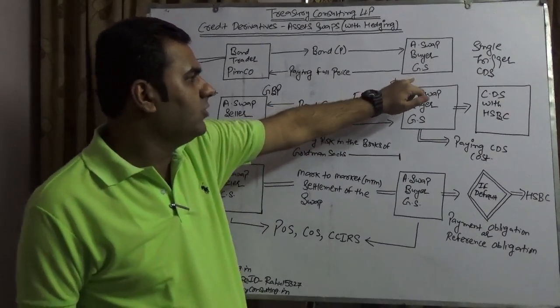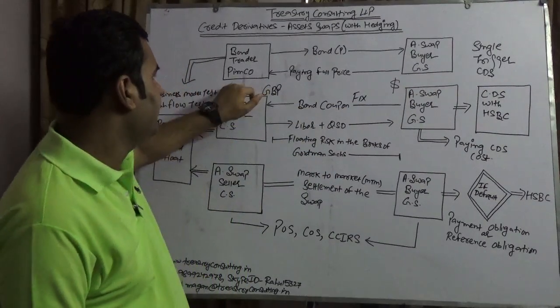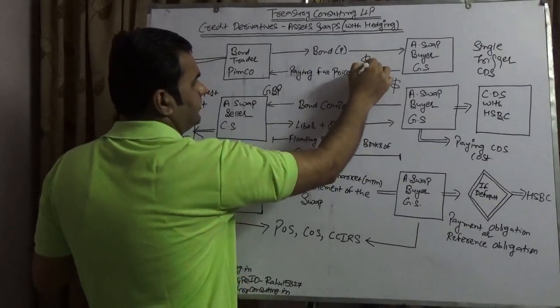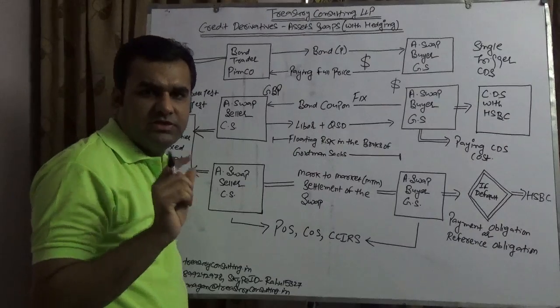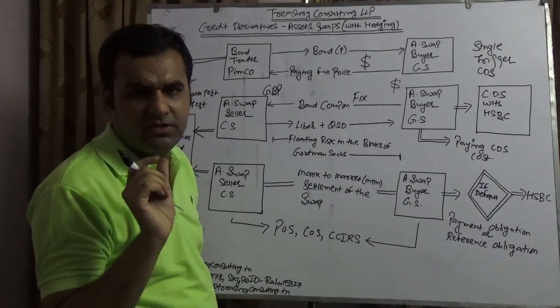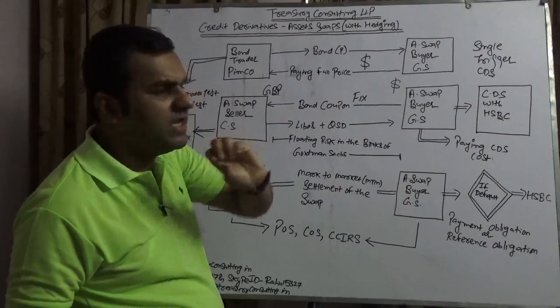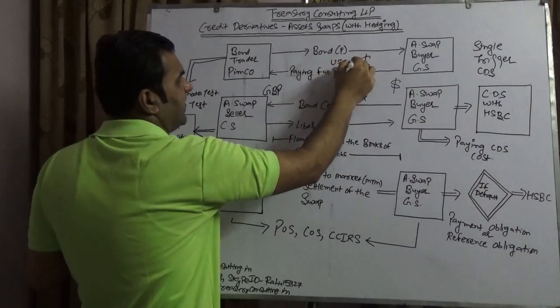We're taking an example where Goldman Sachs wants to buy a bond from PIMCO in dollar terms. The full price they're paying is the dirty price of the bond, which equals clean price plus accrued interest. Clean price is the present value of the bond. They're getting a bond in dollar terms, assuming they're getting a UST (United States Treasury) 10-year.